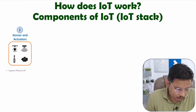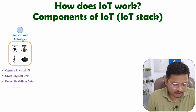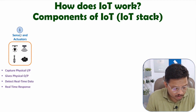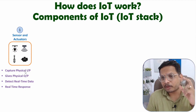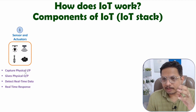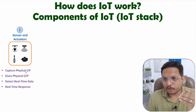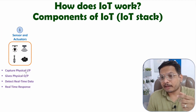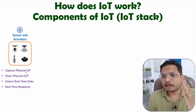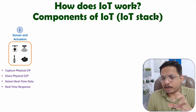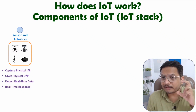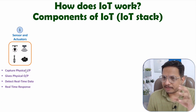The first major component of IoT is sensors and actuators. Sensors are used to capture physical input. For example, if you want to capture temperature, you will use a temperature sensor. If you want to measure weight, you will use a load sensor. If you want to detect gas leakage, you will use a gas sensor. Similarly, to capture any physical entity, you need to use a sensor.